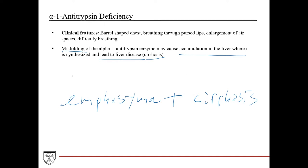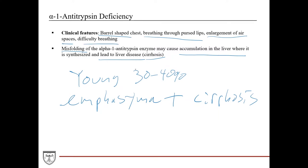If you see a young patient — say 30 to 40 years old — developing emphysema and cirrhosis, or exhibiting symptoms of emphysema such as barrel-shaped chest, breathing through pursed lips, enlargement of airspaces, and difficulty breathing, you want to be highly suspicious for alpha-1 antitrypsin deficiency. Even heavy smokers without the deficiency usually don't develop emphysema until much later in life, so symptoms in someone's 30s or 40s, especially combined with liver damage, should make you very suspicious for this diagnosis.